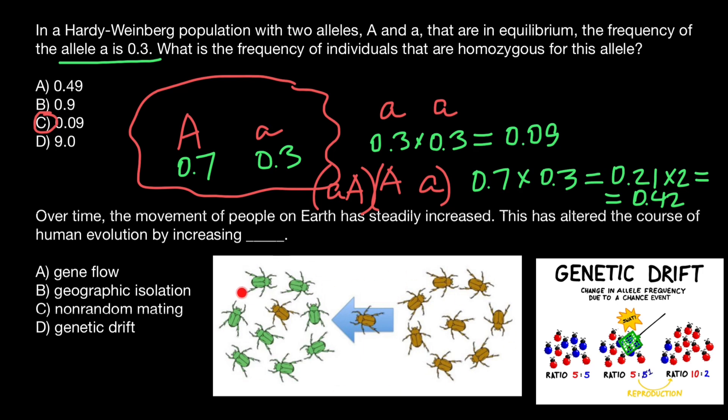Gene flow is when we have two populations which are genetically different and due to migration, now we see that one of the populations became genetically diverse due to migration. One more time, this happened due to migration.